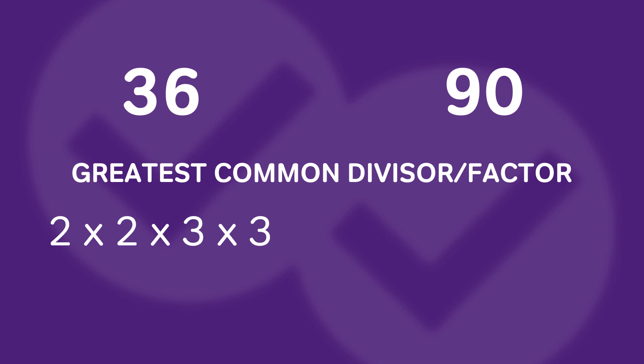Now I look for the prime factors that make up 90. I do the same thing: 90 divided by 2 gives me 45, and 45 is 9 times 5, or 3 times 3 times 5. So 90 = 2 × 3 × 3 × 5.